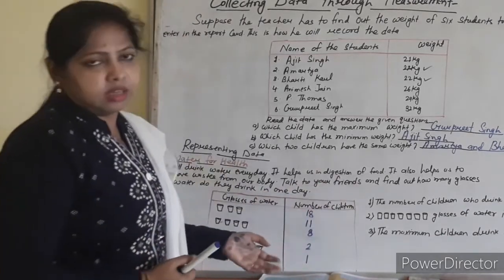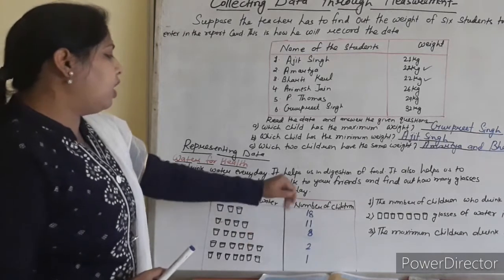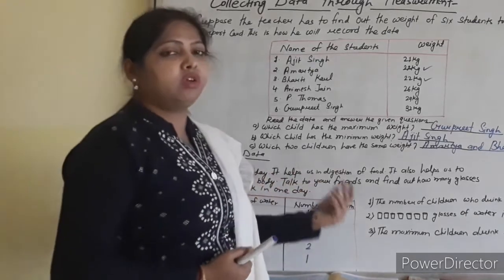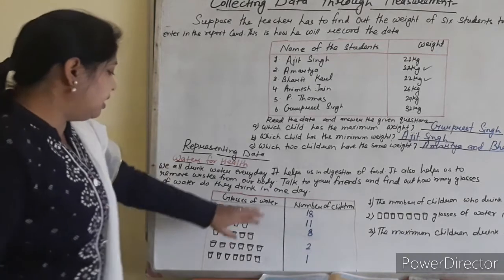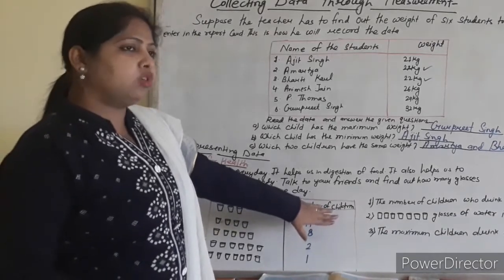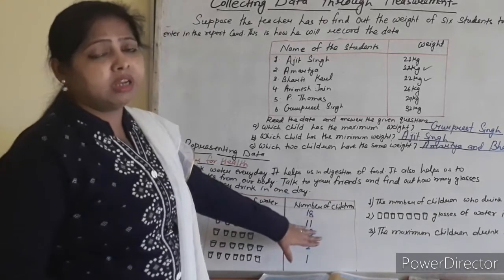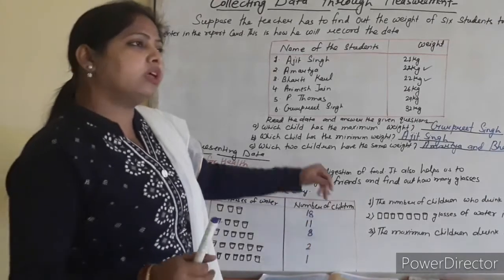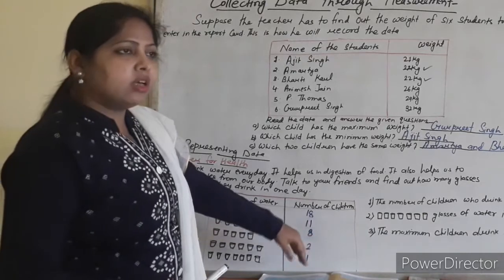I have given this as homework and I will show you how to do it. You have to talk to your friends and find out how many glasses of water each of your friends drinks every day. Here the data is given — the number of glasses — and you have to write the number of friends and find out how many students are drinking how many glasses.